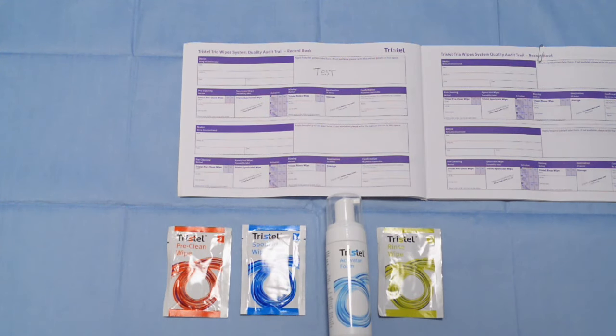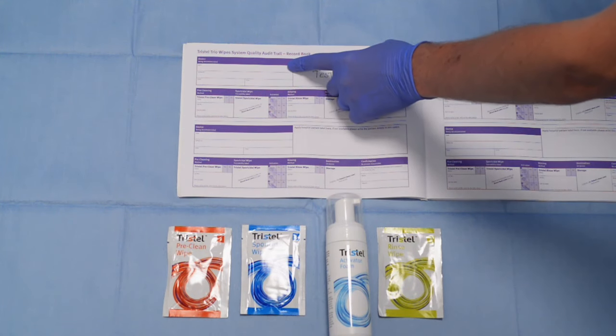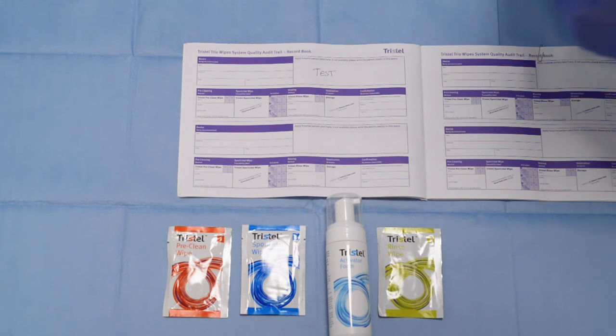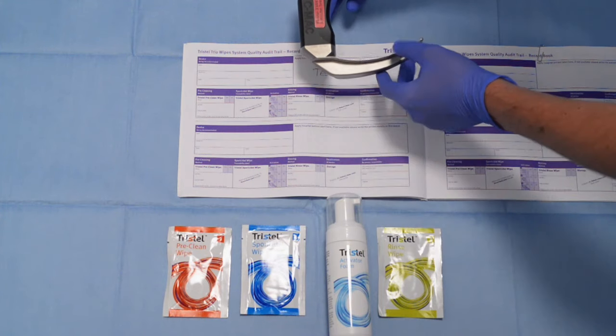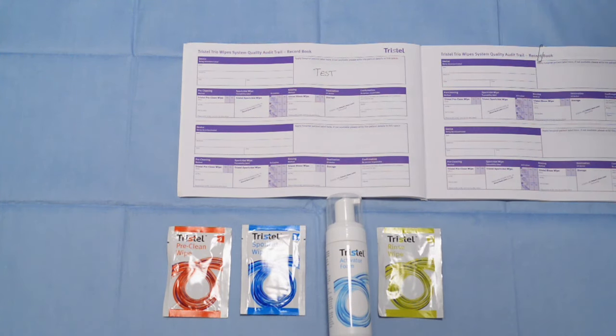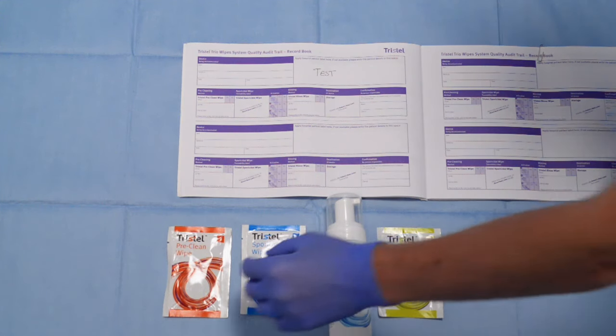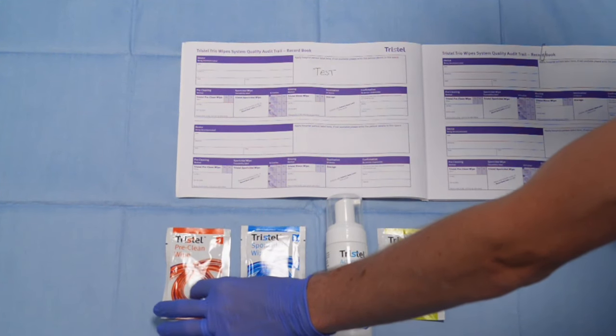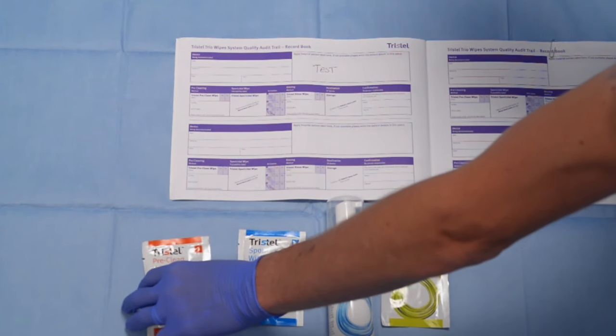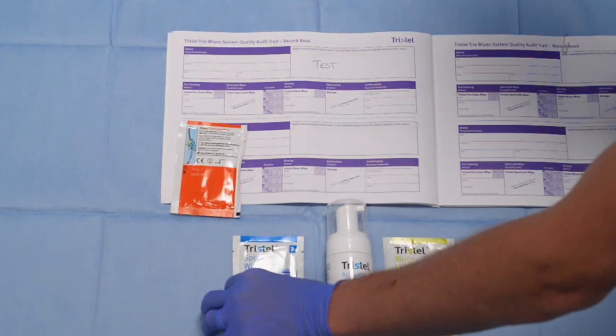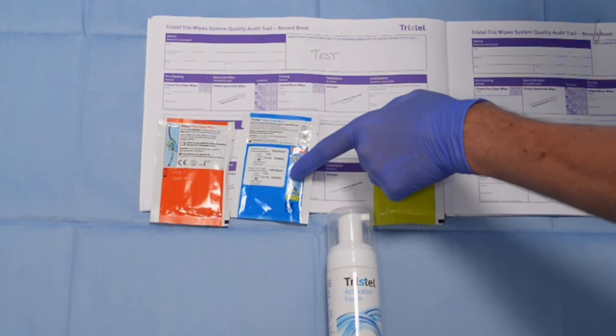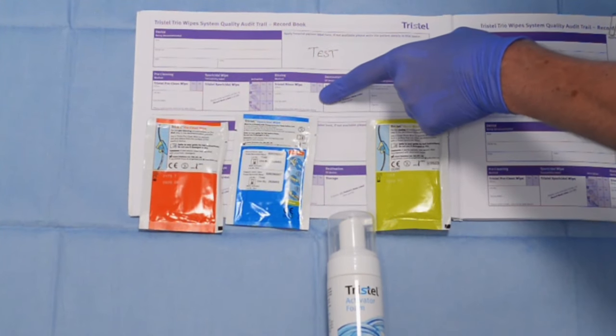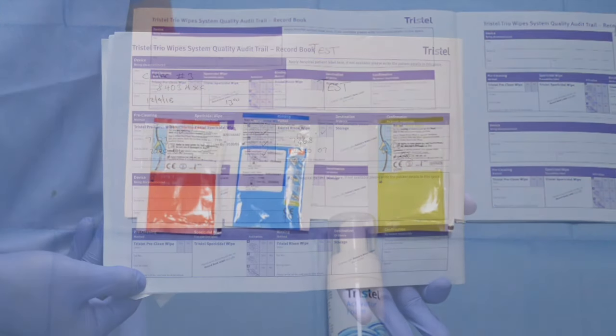Today we've written a test label, but normally a patient label would go here. The item is the CMAC video laryngoscope blade. The serial number is a unique number for each blade, 843 AXE in this case, which goes in here. Include the date and time. Each wipe is numbered 1, 2A, and 3. They all have a lot number and expiry date, which is all documented. 2A comes with a sticker which goes in. Then you're ready to do the process.